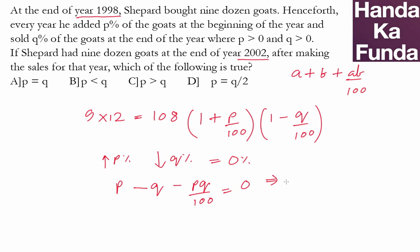So what does this mean? This means that P minus Q is PQ by 100, which essentially means that P minus Q is a positive quantity or P is greater than Q.